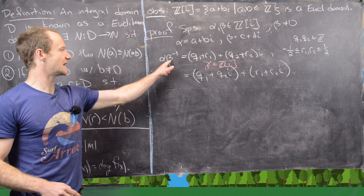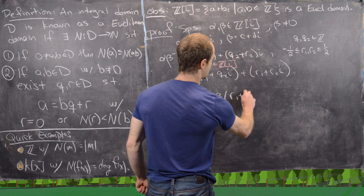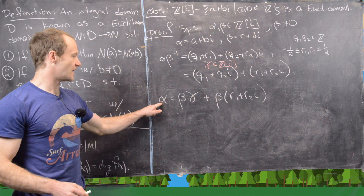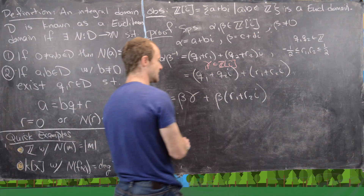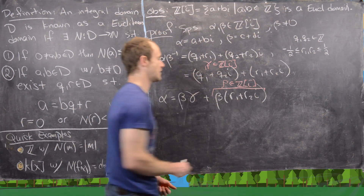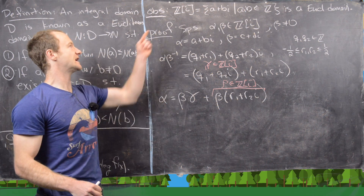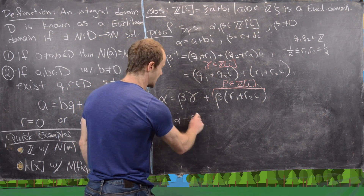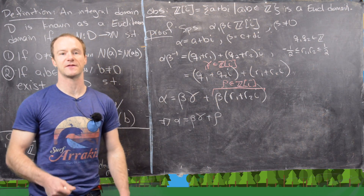Now multiply both sides by β. That gives α = β·γ + β·(r₁ + r₂i). Since α is in ℤ[i] and β·γ is in ℤ[i], the leftover term — call it ρ — must also be in ℤ[i]. So we have α = βγ + ρ, which is exactly the right form for division with remainder.